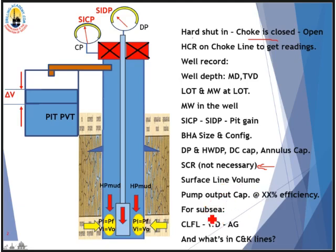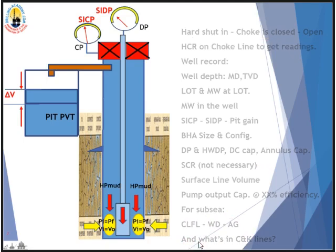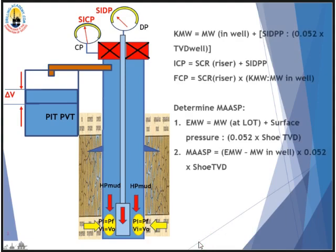You also need surface line volume worked out into strokes, pump output capacity, and for subsea rigs don't forget choke line friction loss, water depth, air gap, and the volume in the choke and kill lines. Here are the basic calculations for the kill mud weight.